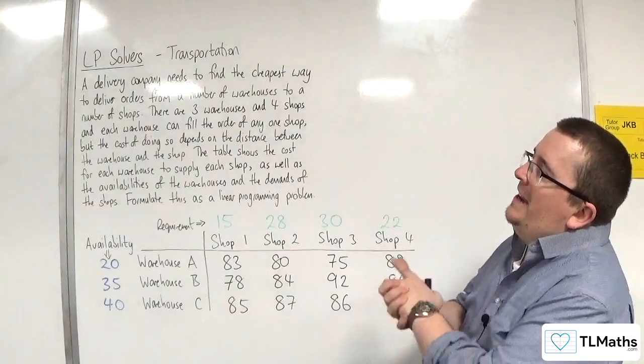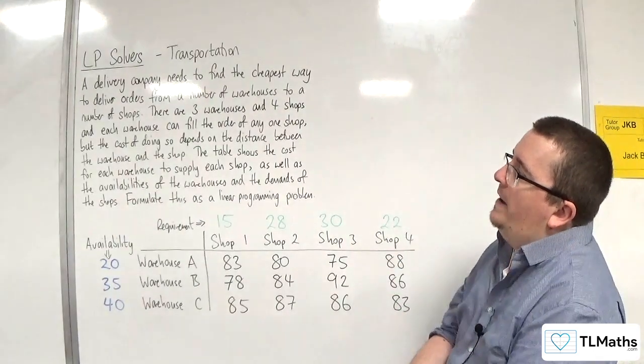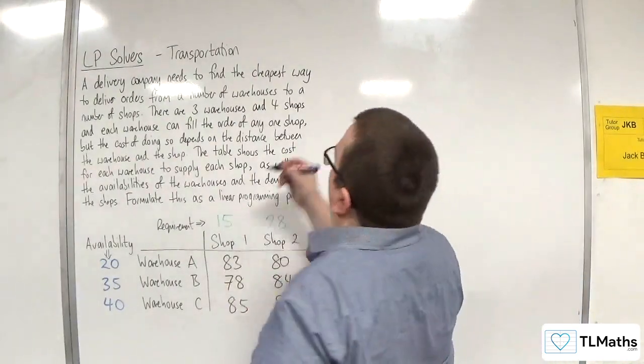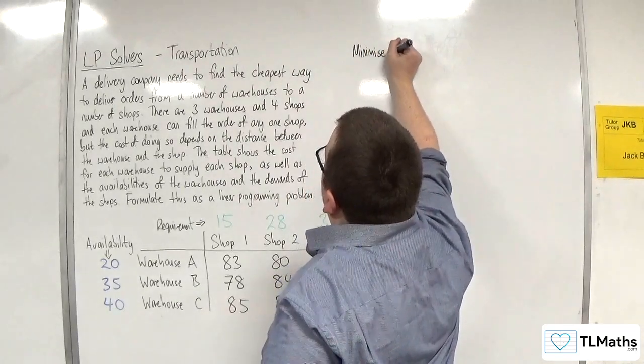We've got a delivery company that needs to find the cheapest way to deliver orders from a number of warehouses to a number of shops. So we can already say that the objective function is going to be minimize. We're going to minimize the total cost.